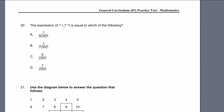Problem 20. The expression 5 to the minus 8 times 7 to the minus 9 is equal to which of the following? Here we see a bunch of answers, and they have a 35 there. So I suspect that they want us to somehow multiply the 5 times the 7.